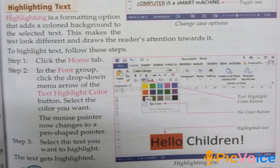Highlighting Text. Highlighting is a formatting option that adds a colored background to the selected text. This makes the text look different and draws the reader's attention towards it. To highlight text: Step 1: Click the Home tab. Step 2: In the Font group, click the drop-down menu arrow of the Text Highlight Color button and select the color you want. The mouse pointer changes to a pen-shaped pointer. Step 3: Select the text you want to highlight. The text gets highlighted.